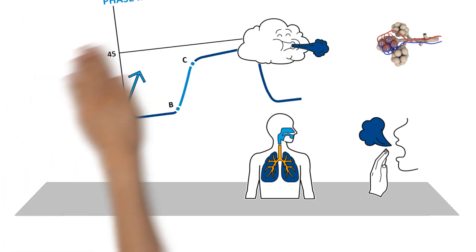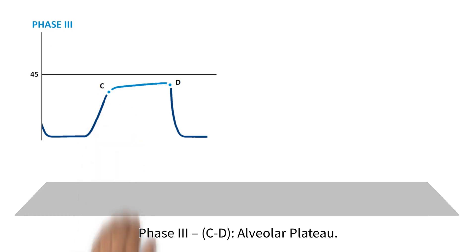Phase three, C to D, alveolar plateau. This phase is where the carbon dioxide concentration curve remains relatively constant as primarily alveolar gas is exhaled. This is known as the alveolar plateau.